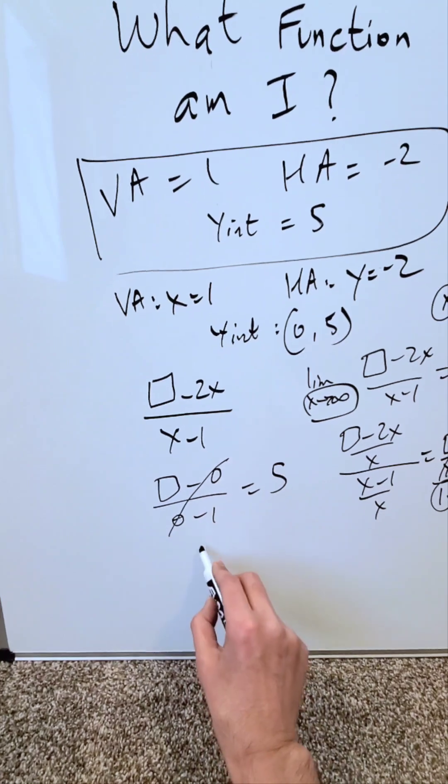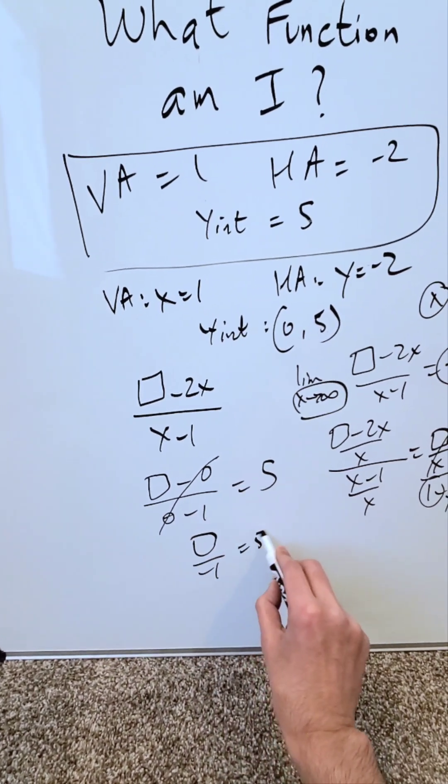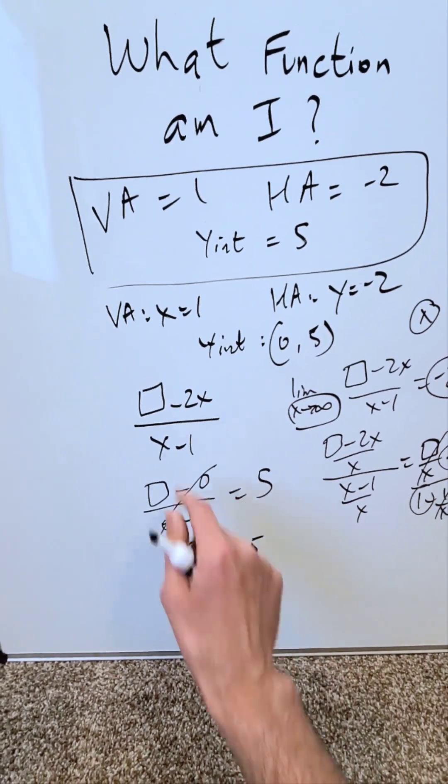These are meaningless. I have an unknown over minus 1 is equal to 5 and that unknown is equal to what? Minus 5.